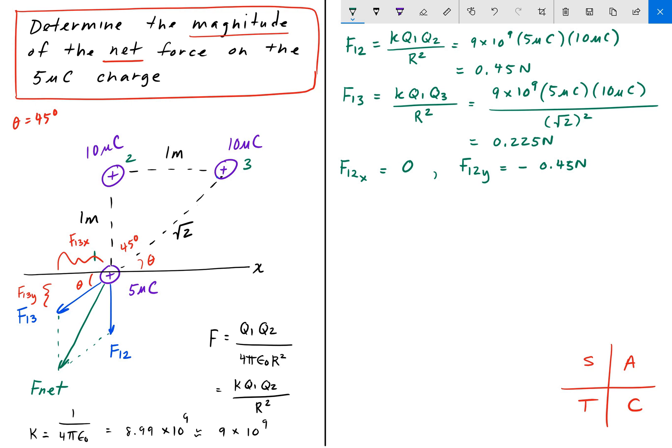We'll switch back to green. We have that F13x, again using trigonometric relationships here, is equal to F13 times the cosine of theta, which equals 0.225 times the square root of 2 over 2. So that's the cosine of 45 degrees. But remember, these are all going to be negative, right? So this is going to be negative, and this is going to be negative. And when we do that, we get that the x component is negative 0.159.